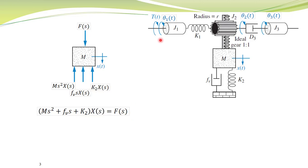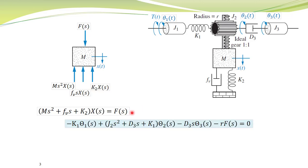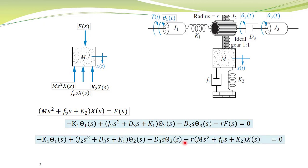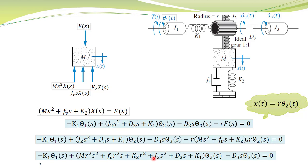On the previous slides we had three equations corresponding to each of the displacements theta1, theta2, and theta3. The second equation corresponded to displacement theta2 and had a variable F(s). We can replace F(s) with the expression from the force balance equation. This F(s) is replaced by the left-hand side of that equation. Furthermore, x(s) is related to theta2 by x(s) = r·theta2(s), so x(s) is replaced by r·theta2(s). Taking theta2(s) common from the relevant terms, this equation transforms into a simplified form.